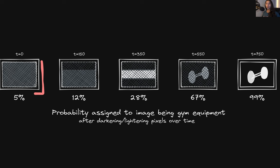We'd be doing this iteration of darkening and lightening pixels with the objective to get the model to classify an image as a piece of gym equipment. At T equals zero we are at the very beginning with our original noisy image. At time step 150, we've darkened a section of pixels and increased the model's probability to 12% from the original 5%. At time step 350, we've lightened the pixels in the middle and darkened the pixels on the top and bottom to get a 28% probability. We can continue until we've carved out what looks like a dumbbell, for which the model assigns a 99% probability.